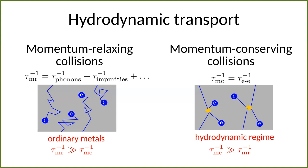Typically in metals, there are two different types of collisions. On the one hand, we have momentum-relaxing collisions — for example, electrons with phonons or electrons with impurities — where the momentum of the electrons is not conserved. Then there is scattering of electrons amongst themselves, where the total momentum is conserved. The hydrodynamic regime is accessed when these momentum-conserving collisions are the dominant source of scattering, in contrast to most ordinary metals where momentum-relaxing processes dominate. In some extremely clean materials, such as bilayer graphene, we can access this new interesting hydrodynamic regime.